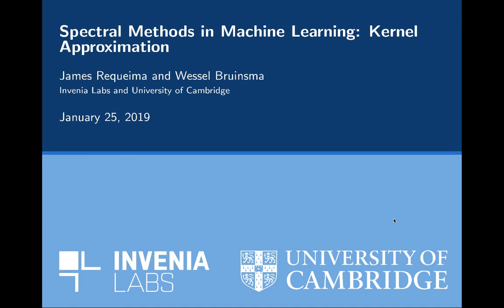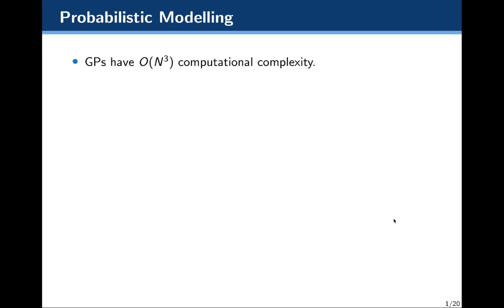Hi and welcome back to Spectral Methods and Machine Learning. Today we're going to be talking about kernel approximation. If you remember from last time, Gaussian processes have order n cubed computational complexity, where n is the number of data points we're attempting to train on. This can be quite a computational bottleneck if our dataset is very large.